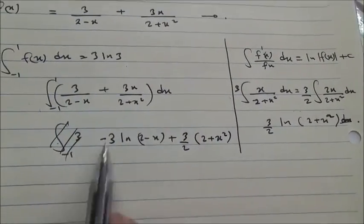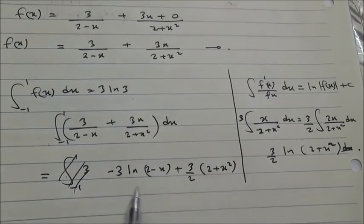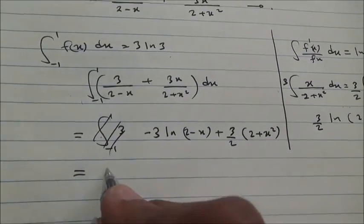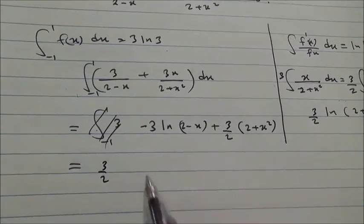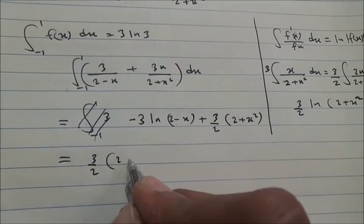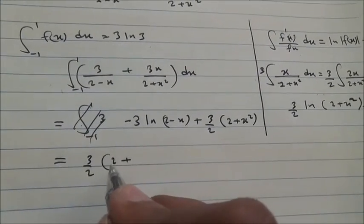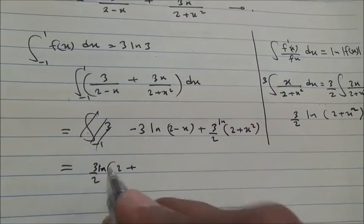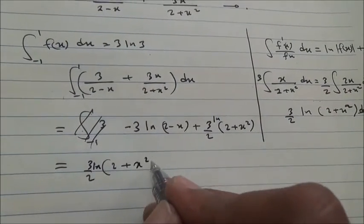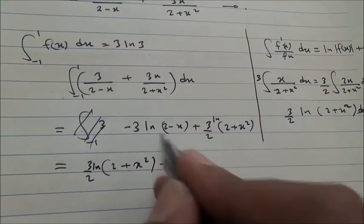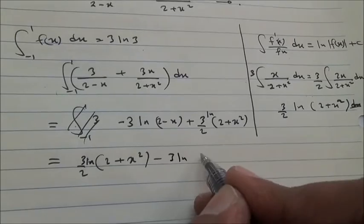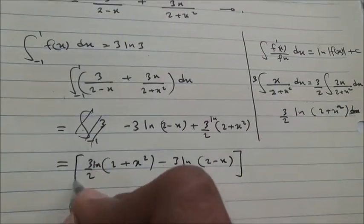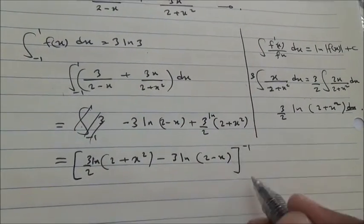We rearrange and write the combined expression as 3 over 2 times ln of 2 plus x squared minus 3 ln of 2 minus x, evaluated with limits from minus 1 to 1.